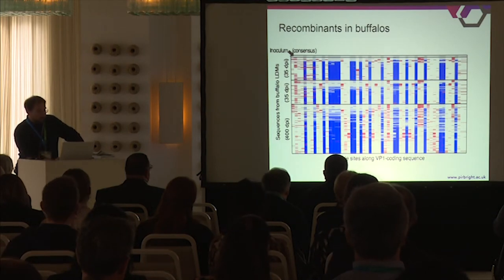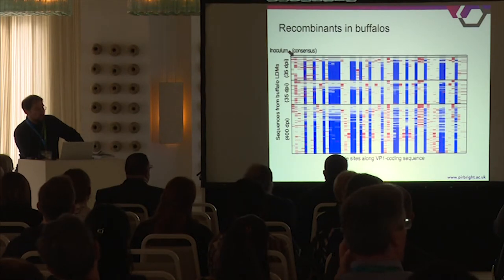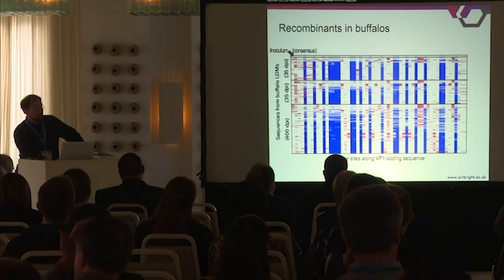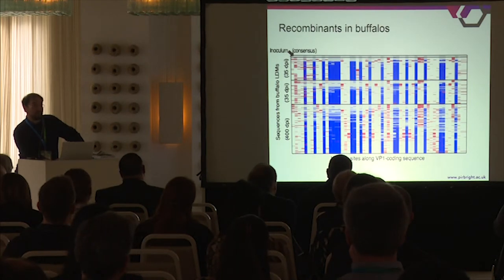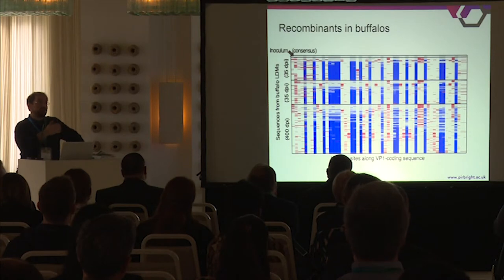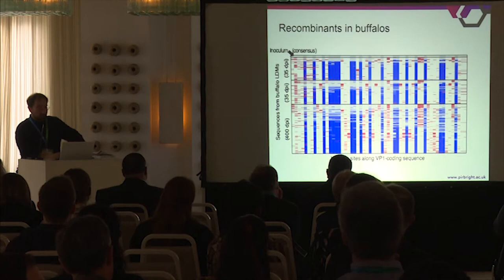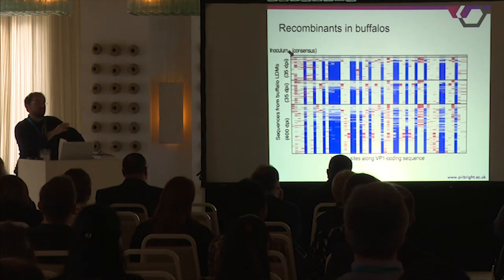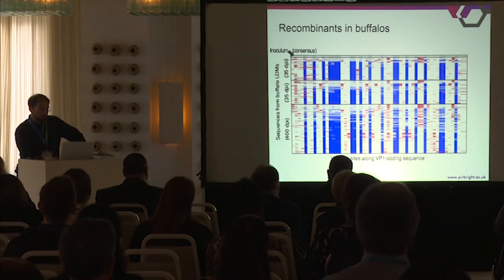An interesting thing of this plot is that you can also see that the genetic structure among different animals is pretty much the same. Essentially, the way the infection proceeds is quite predictable once the inoculum is the same for the three animals. This again is a sign of the strong selection during the acute infection phase.